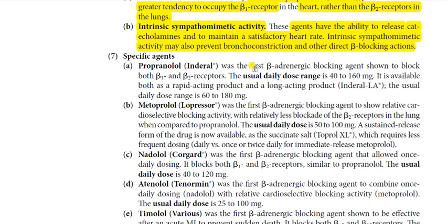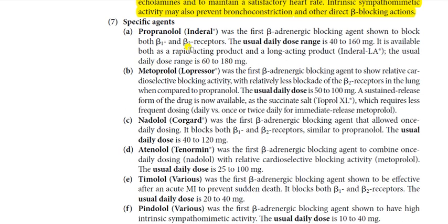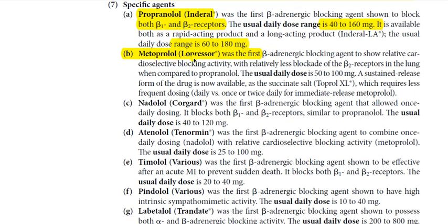Specific agents: Propranolol was the first beta-adrenergic blocking agent to block both beta-1 and beta-2 receptors. The usual daily dose range is 40 to 160 mg, available as both rapid-acting and long-acting products, with the long-acting dose ranging from 60 to 180 mg. Metoprolol was the first beta blocker to show relative cardioselectivity — more beta-1 selective with less beta-2 blockade compared to propranolol. The usual daily dose is 50 to 100 mg.